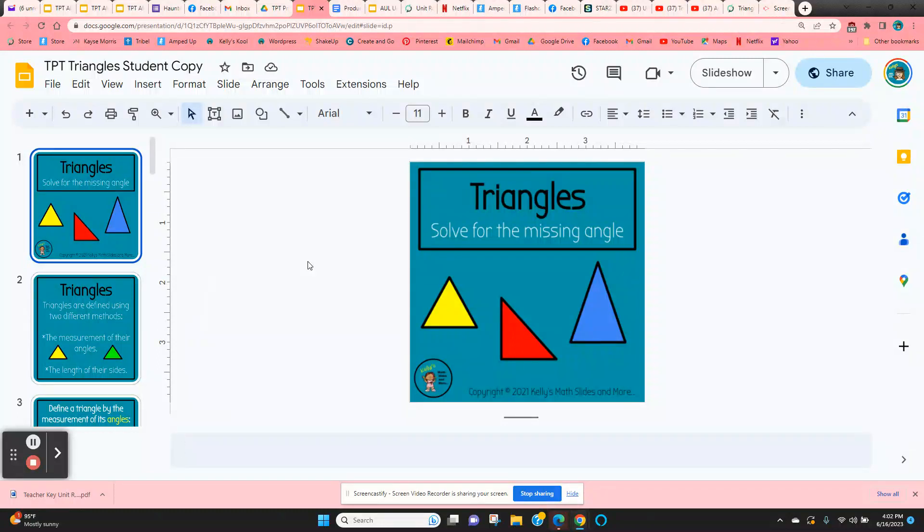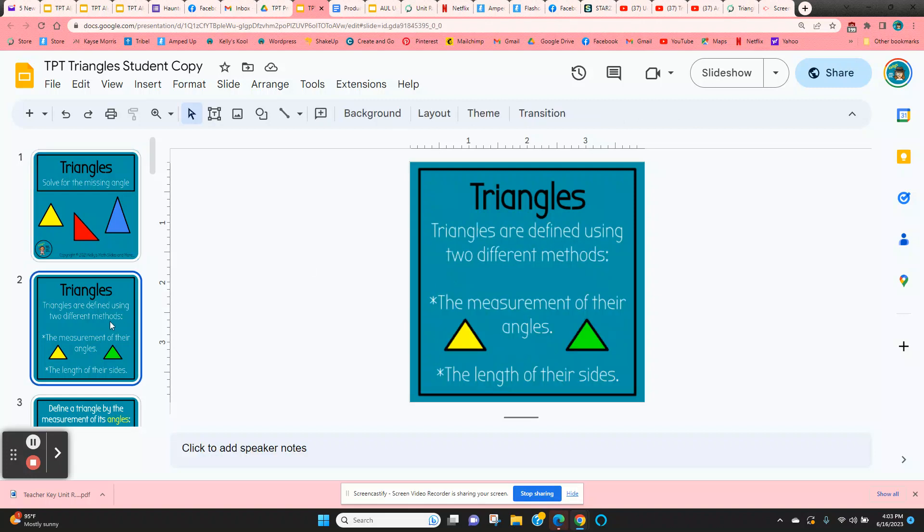Triangles solve for the missing angle. This is a digital lesson that starts out telling students how we define different triangles. There's two different methods we can define them by: the measurement of their angles or by the length of their sides.